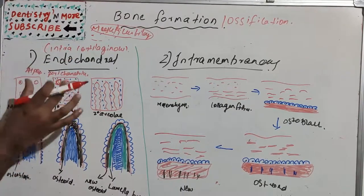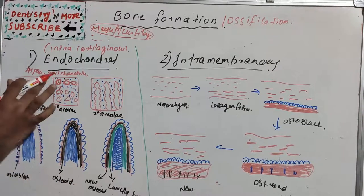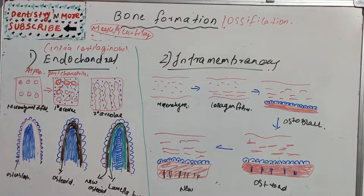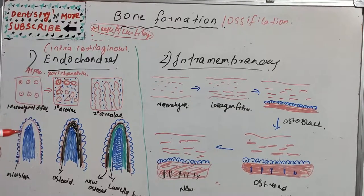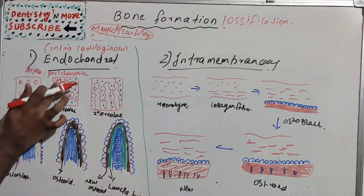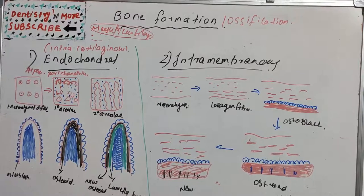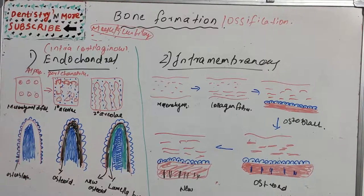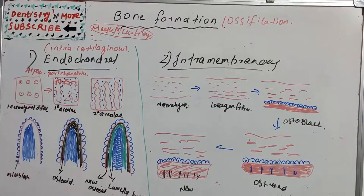So the process is: perichondrium → chondroblasts → chondroblasts secrete alkaline phosphatase → intercellular calcification → nutritional supply is cut off → chondrocytes die → empty spaces called primary areolae are formed. Then the blood vessels and osteogenic cells from the perichondrium invade the calcified cartilaginous matrix, which is now reduced to bars or walls due to the eating away of the calcified matrices, leaving large empty spaces between the walls called secondary areolae.